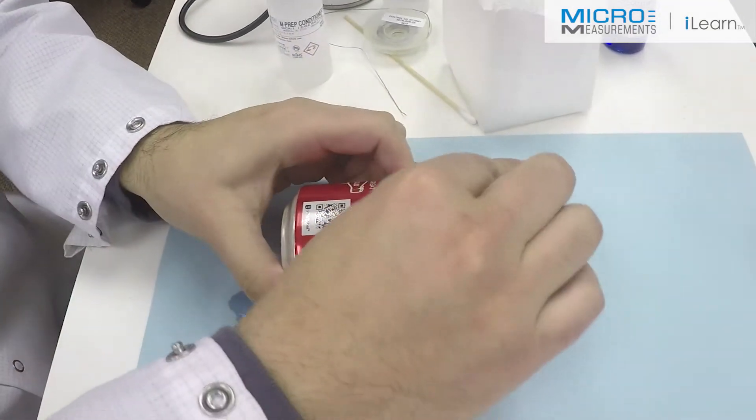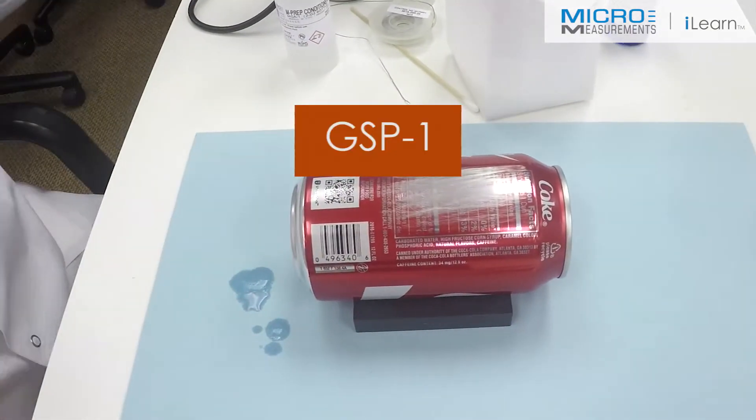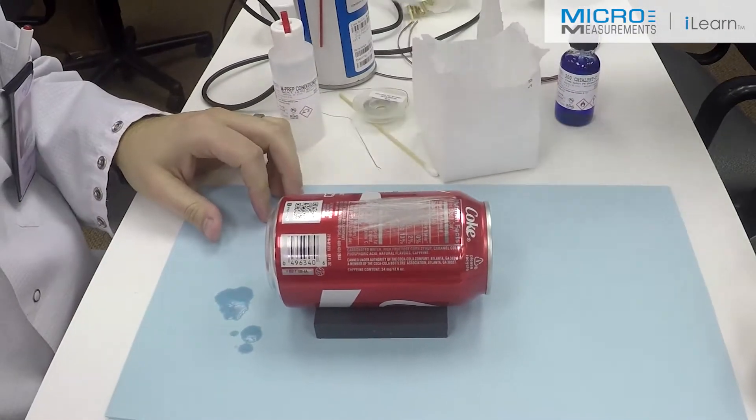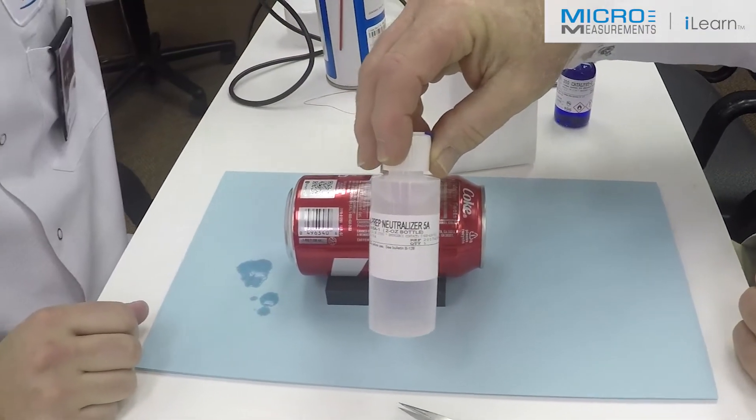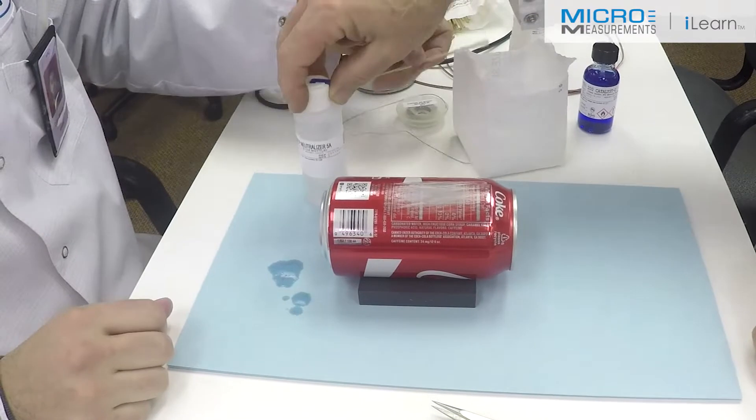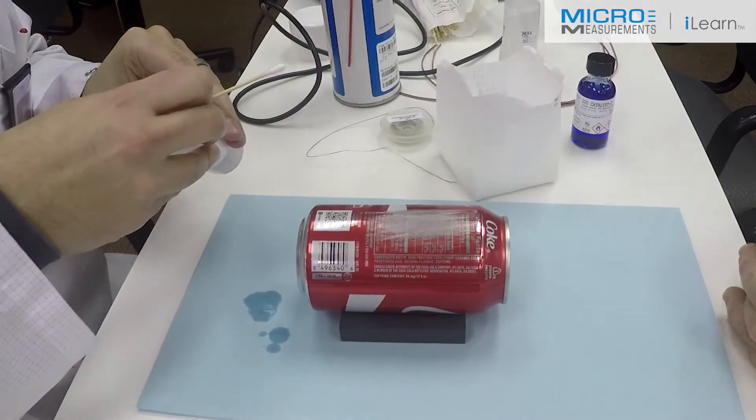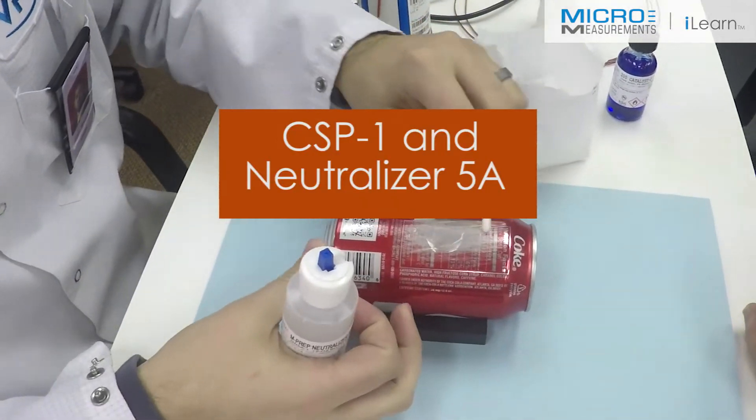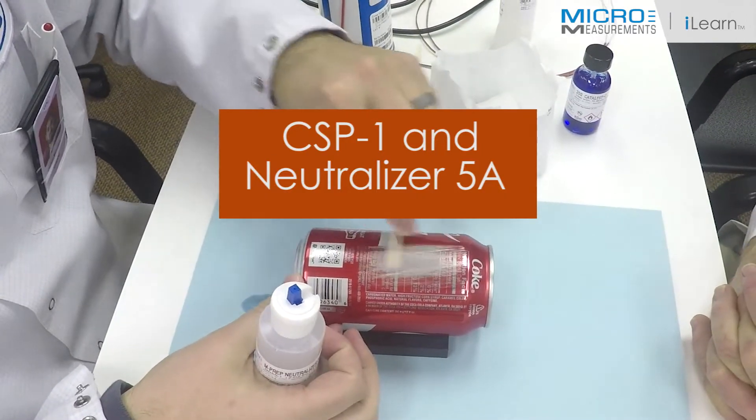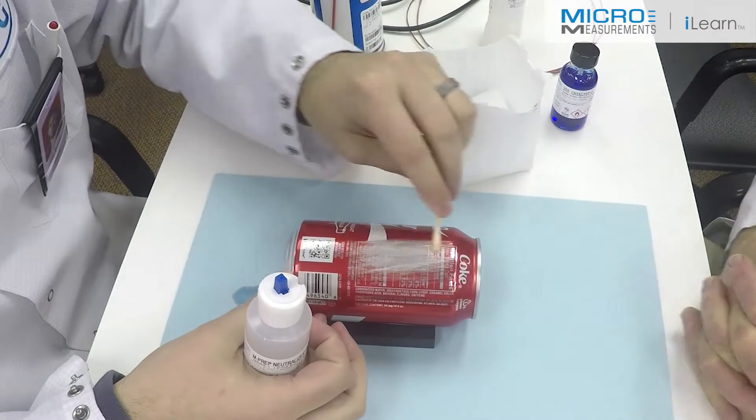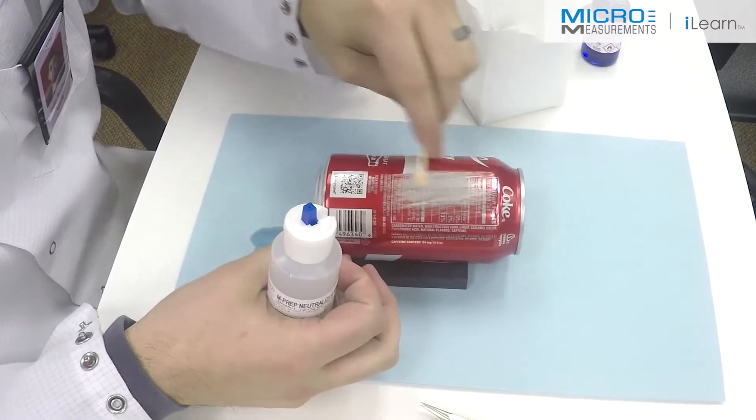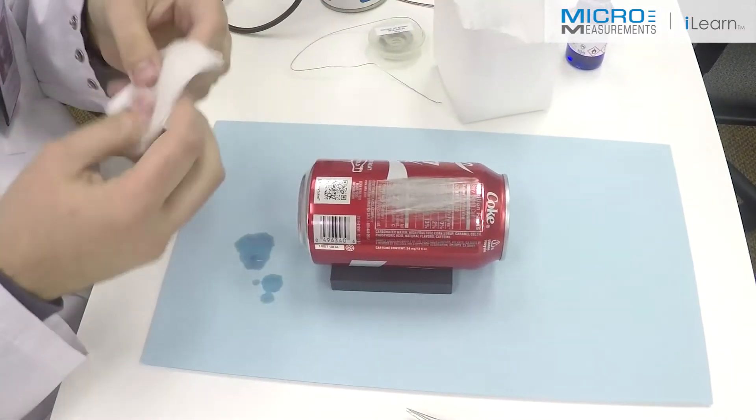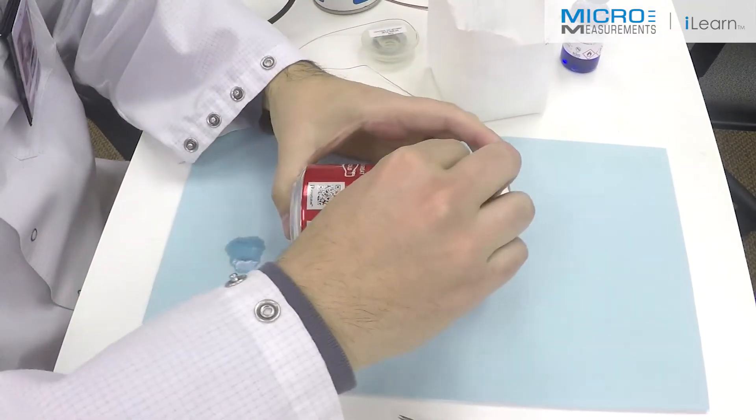He'll then take a dry gauze sponge, fold it into quarters, and with a single wiping motion absorb that contaminated material. Next step will be to scrub with the Neutralizer 5A. It's a Bo Peep ammonia solution with a little bit of detergent in it for a wetting agent. Take another clean cotton tip applicator and scrub with the Neutralizer 5A, the blue tip bottle. Now dry it once more.